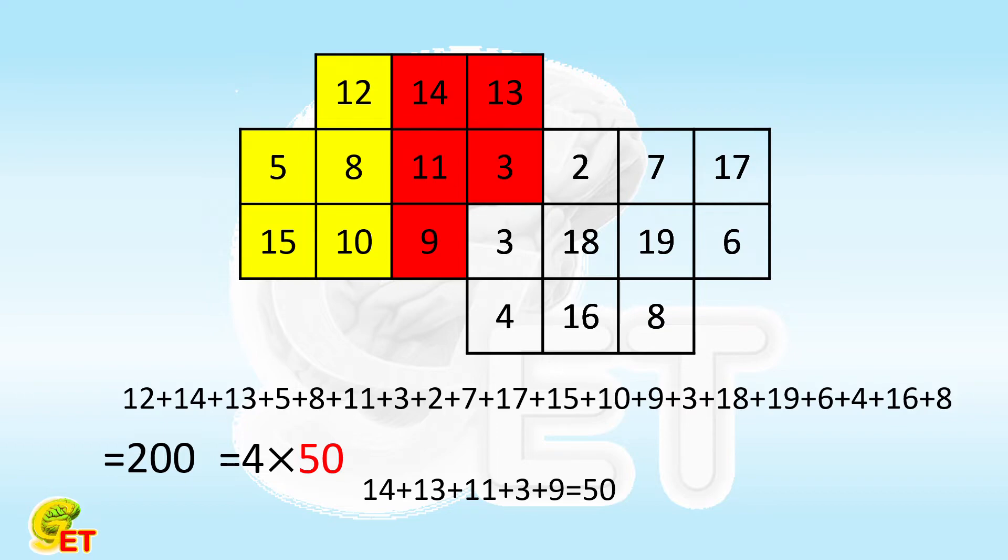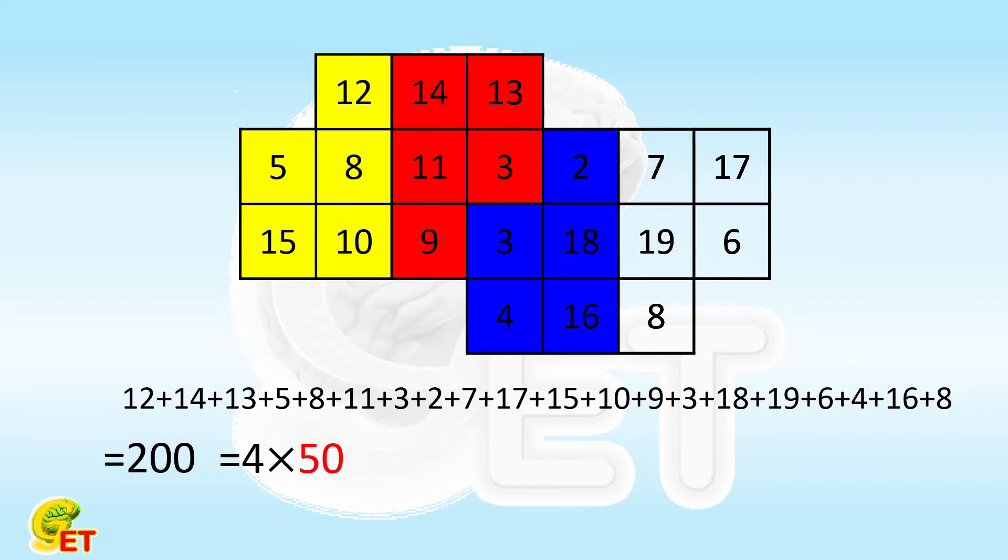But then we ran into trouble. There is a number 3 next to the red part. If we pick an area containing this 3 in the same shape, there are only two ways. If we select it in this way, there is only one odd number 3 among all the five numbers and their summation cannot be an even number 50, so we give it up.